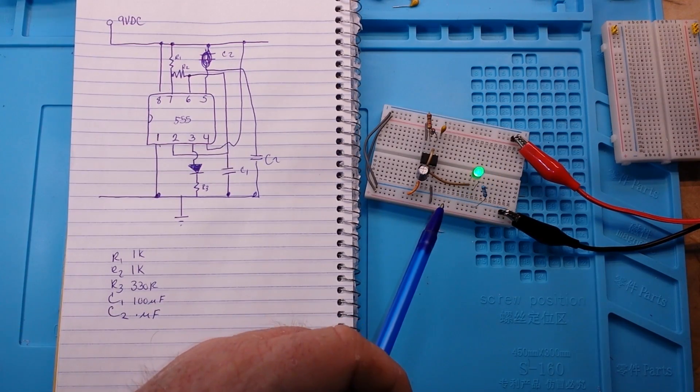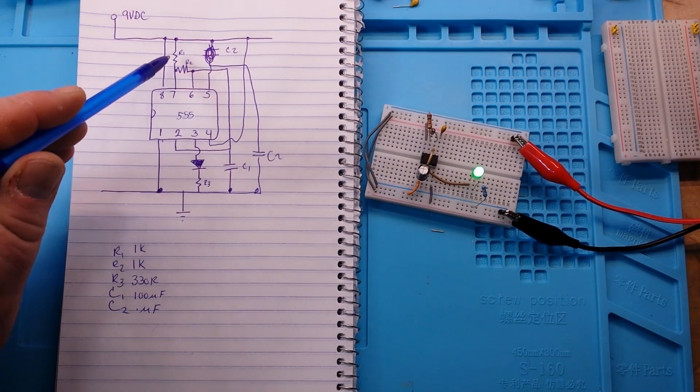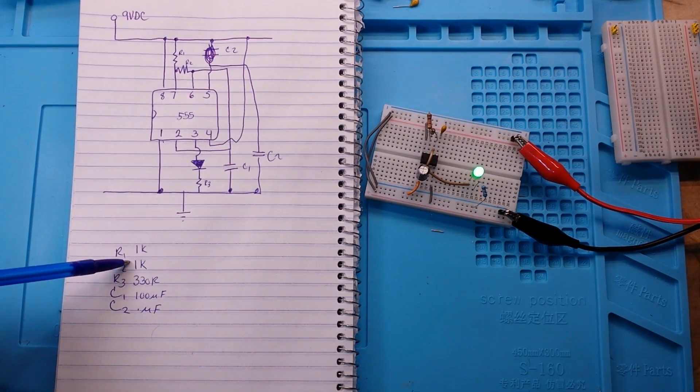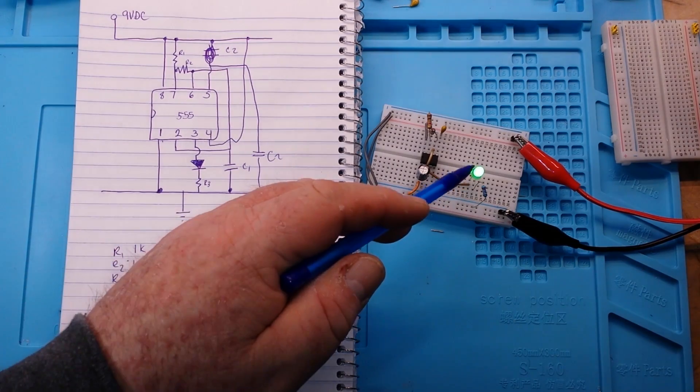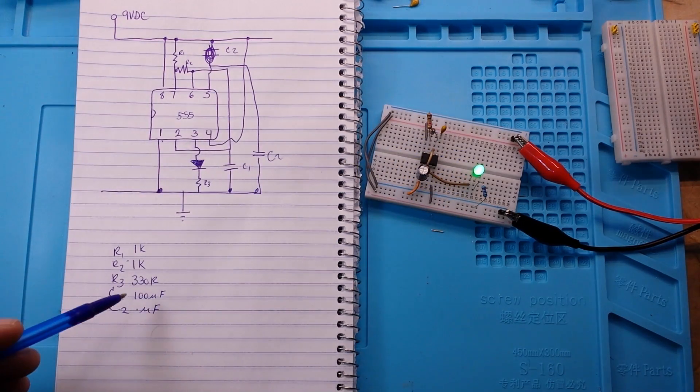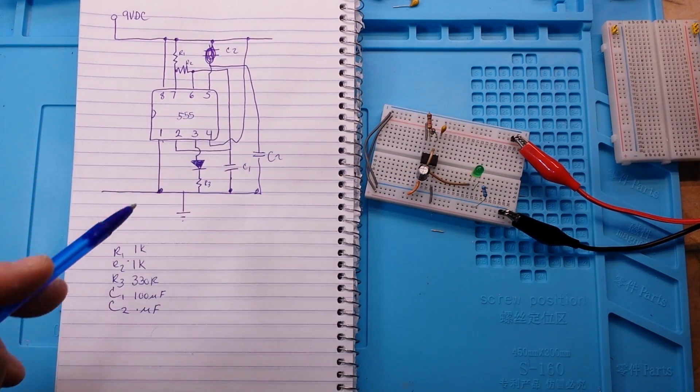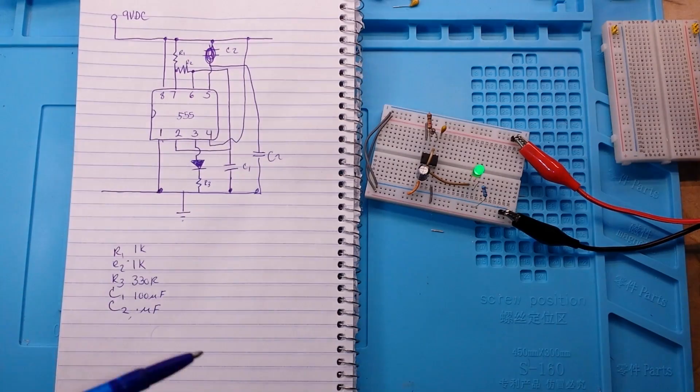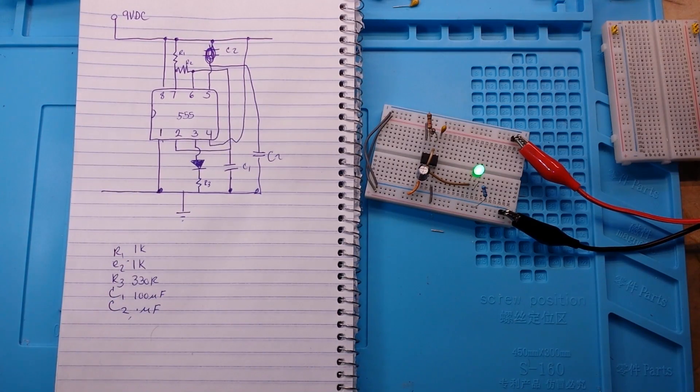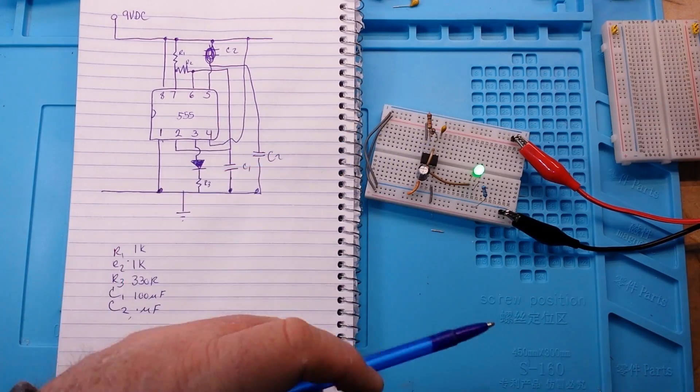With these values here, resistors 1 and 2, our timing resistors, are each 1k. Resistor 3 here is a 330 ohm resistor just to control the current on that diode. Our timing capacitor C1 is 100 microfarad and C2 on that control is just a bypass capacitor, 0.1 microfarad.